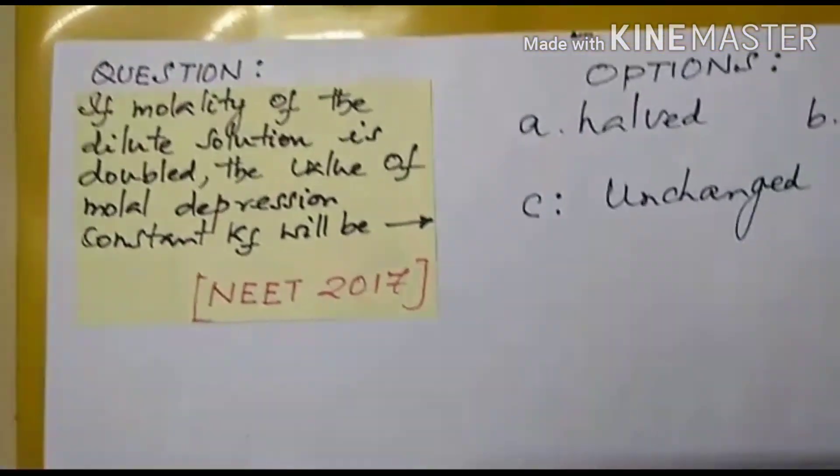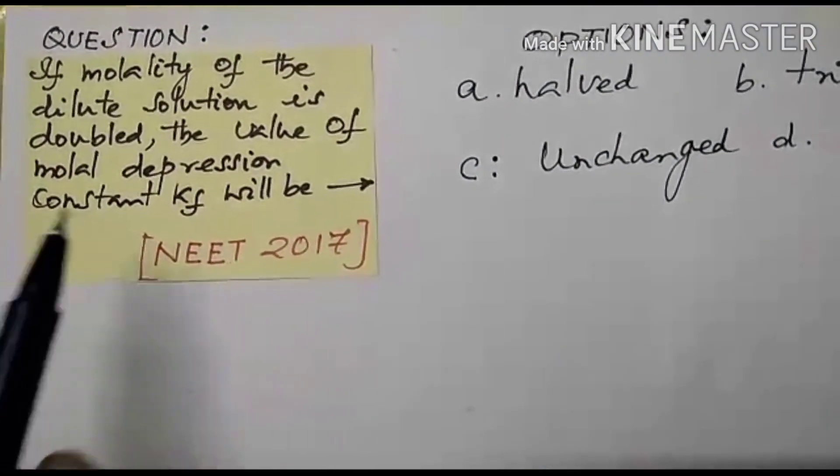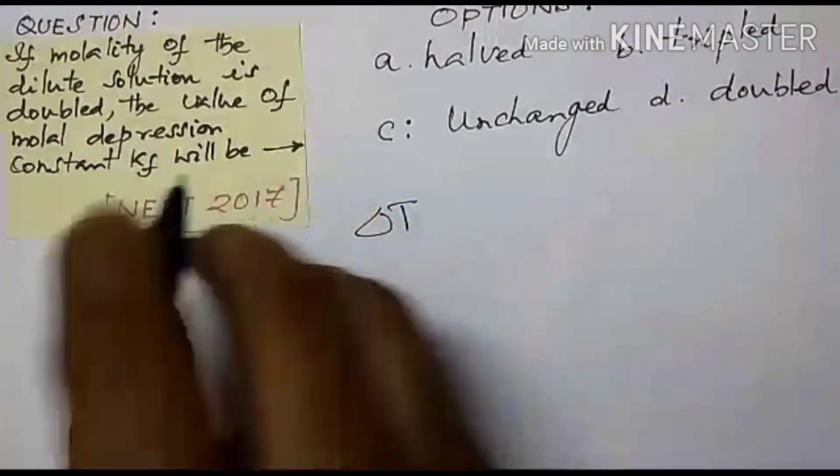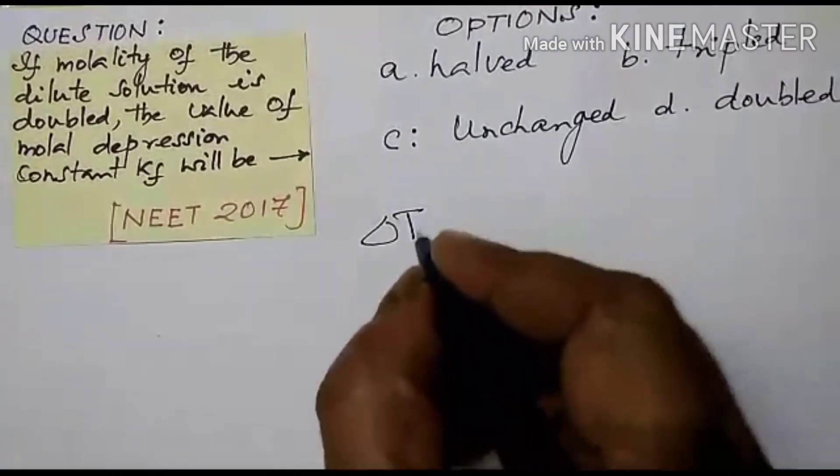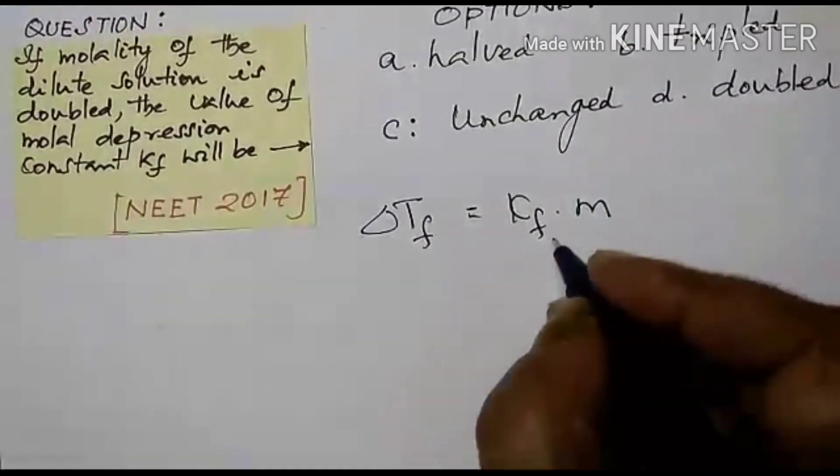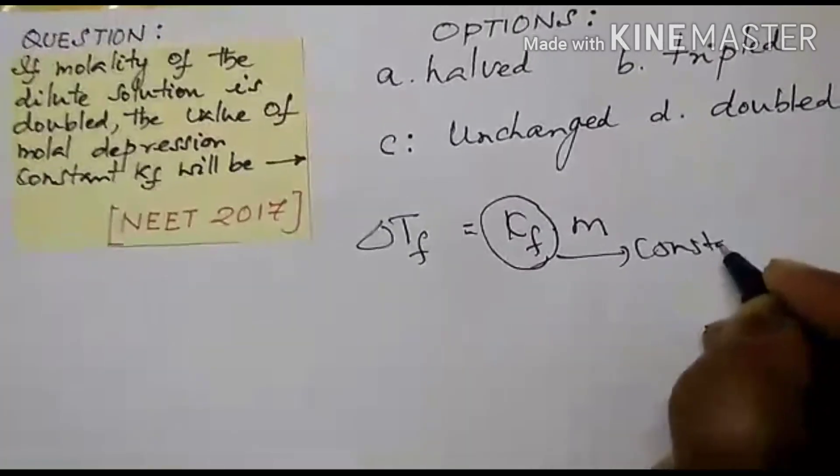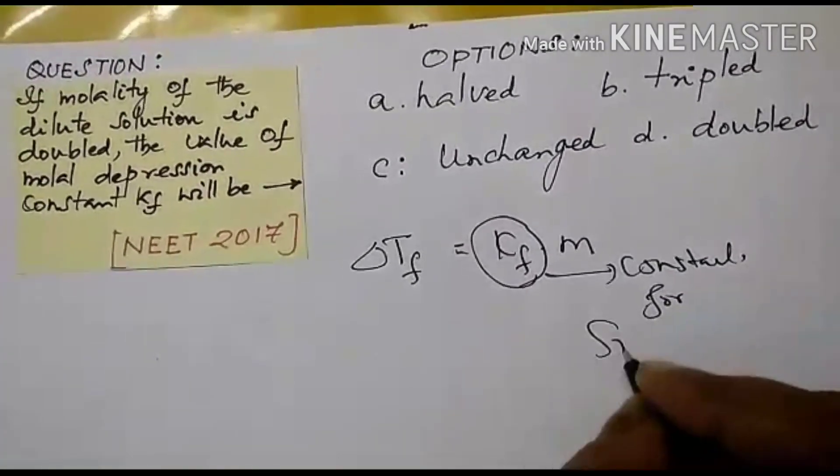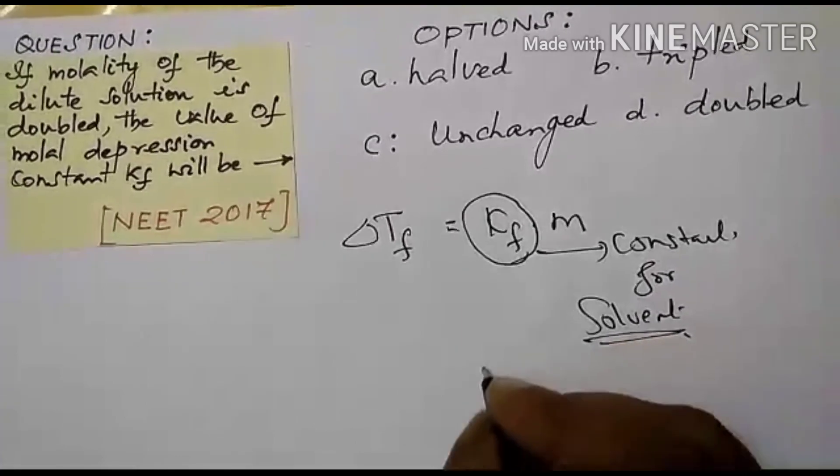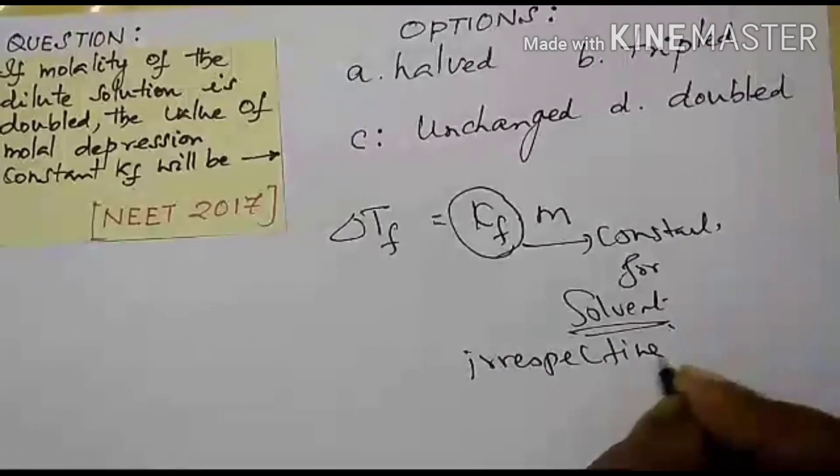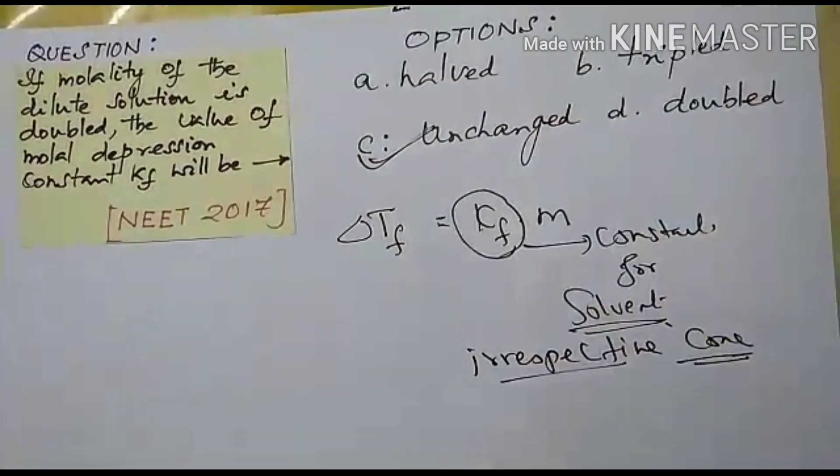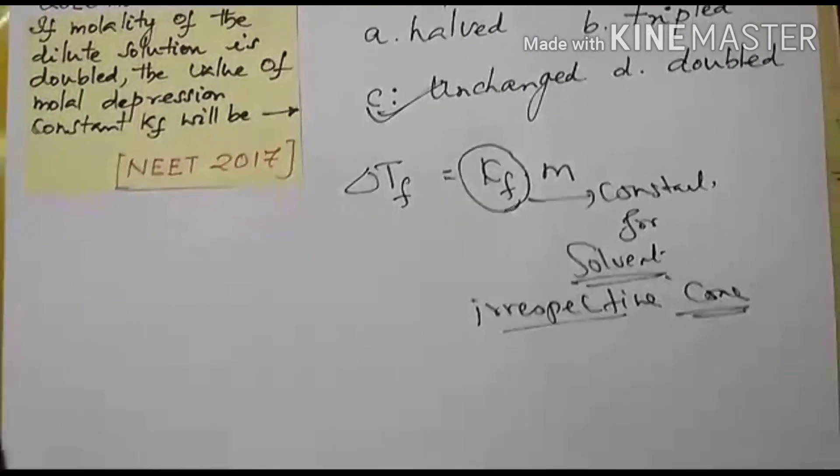Let us see the remaining two questions. If molality of the dilute solution is doubled, the value of molar depression constant Kf will be. Now the formula is delta Tb. They are giving us a depression constant. Elevation of depression, it is that means for freezing point. So what they meant is this is given as the constant. This is constant for the solvent. So it is irrespective of the concentration. So the dilution, it is irrespective of the concentration because it is the constant. So the answer is unchanged. These are the very important knowledge based questions. For this answering you may not find any time at all.